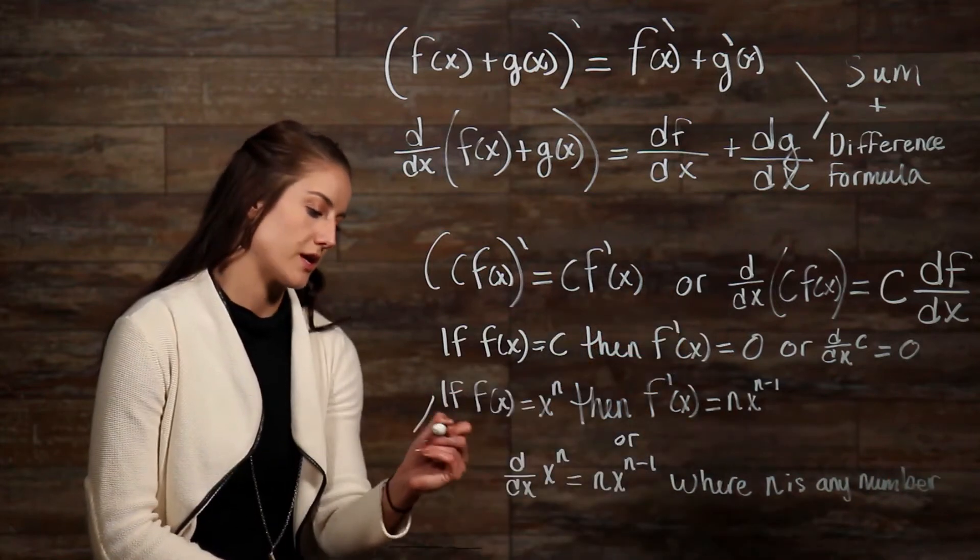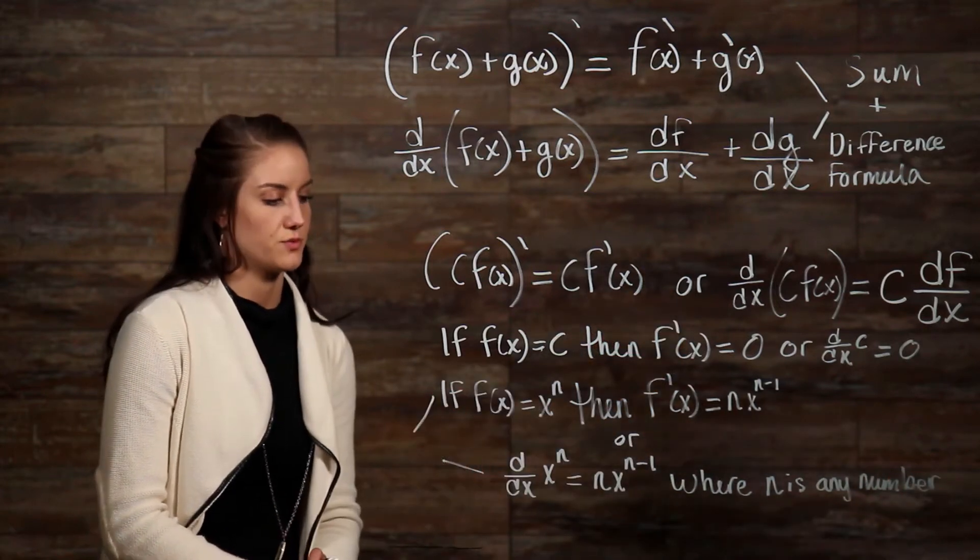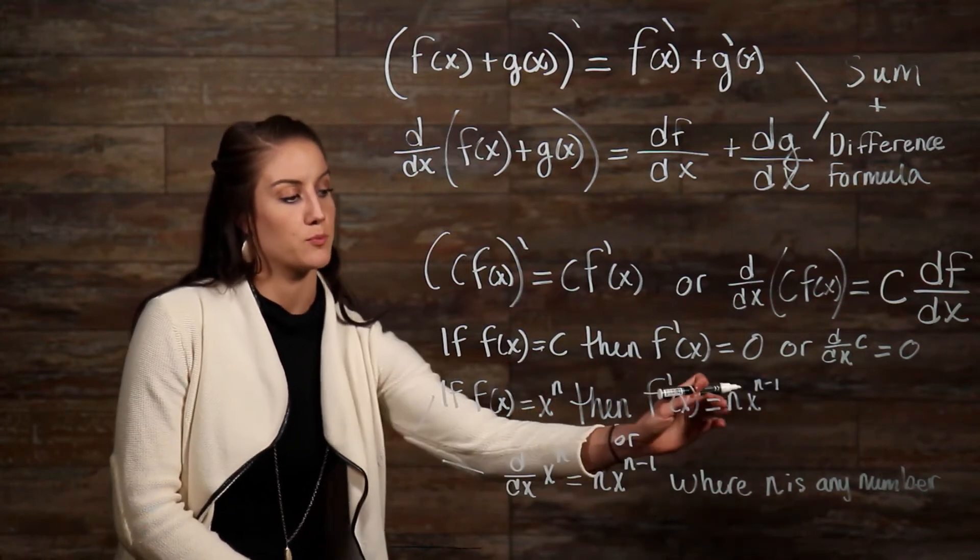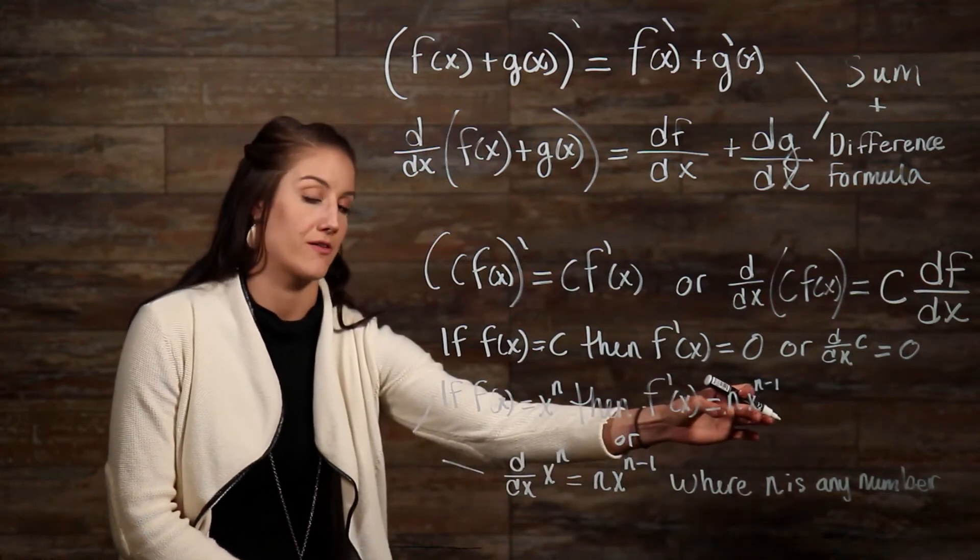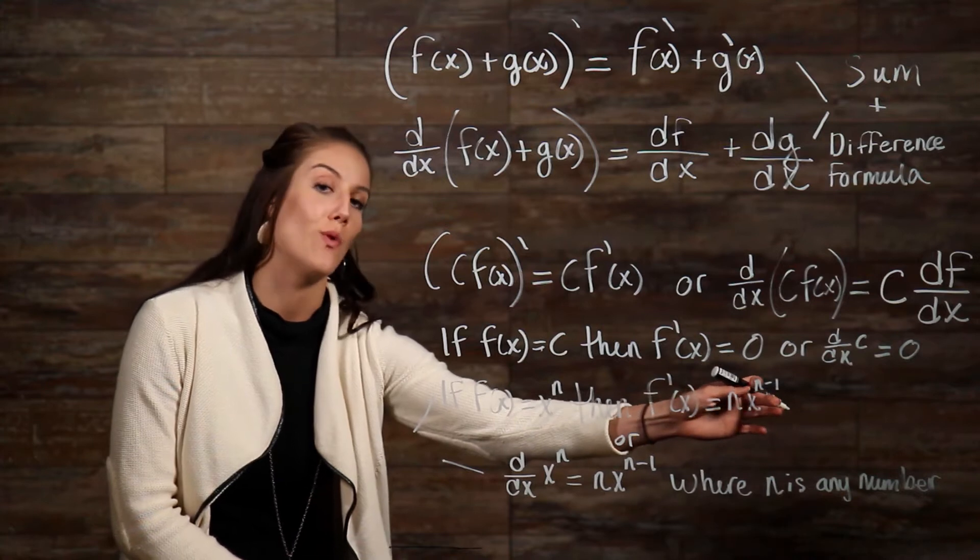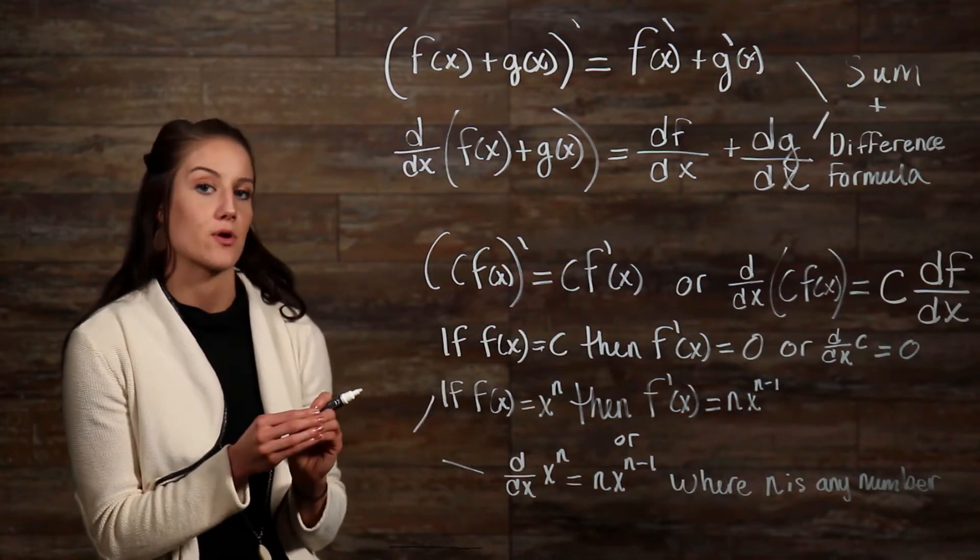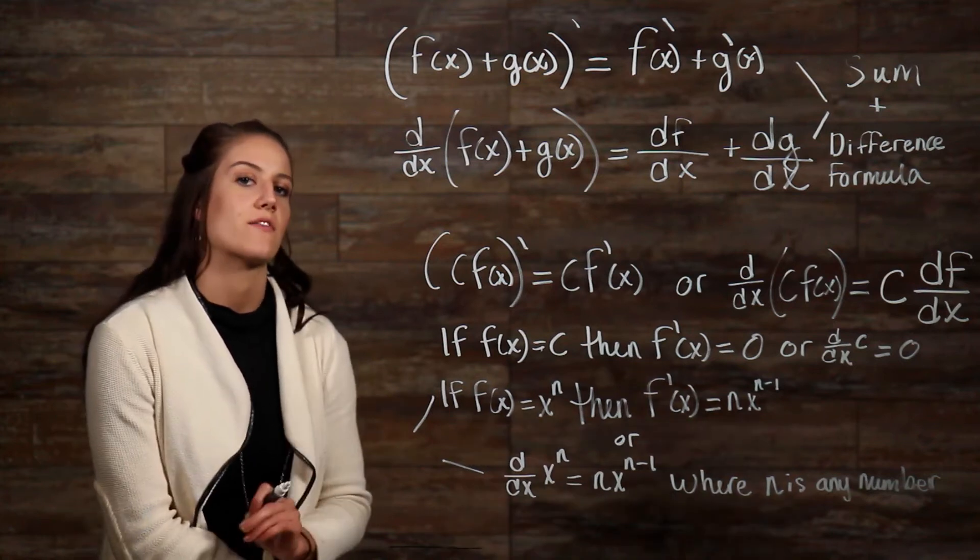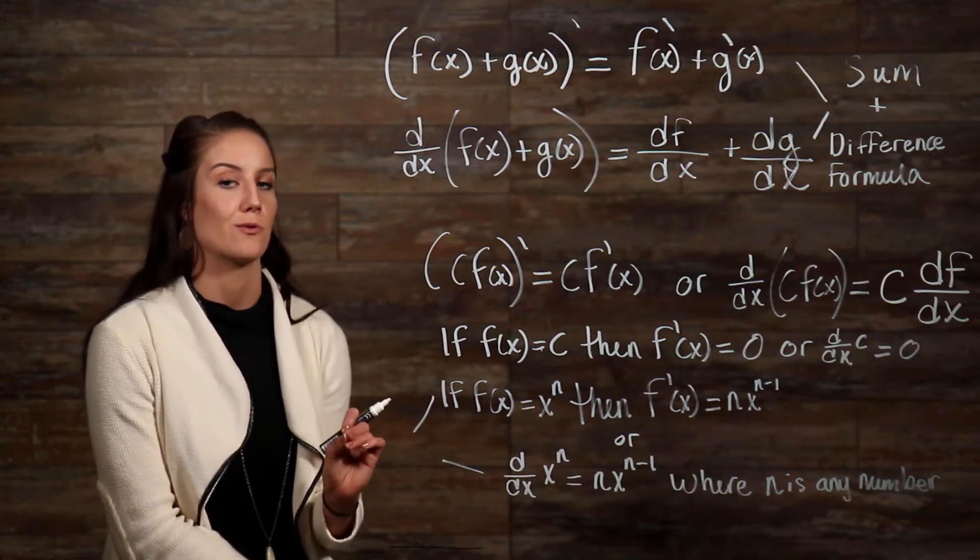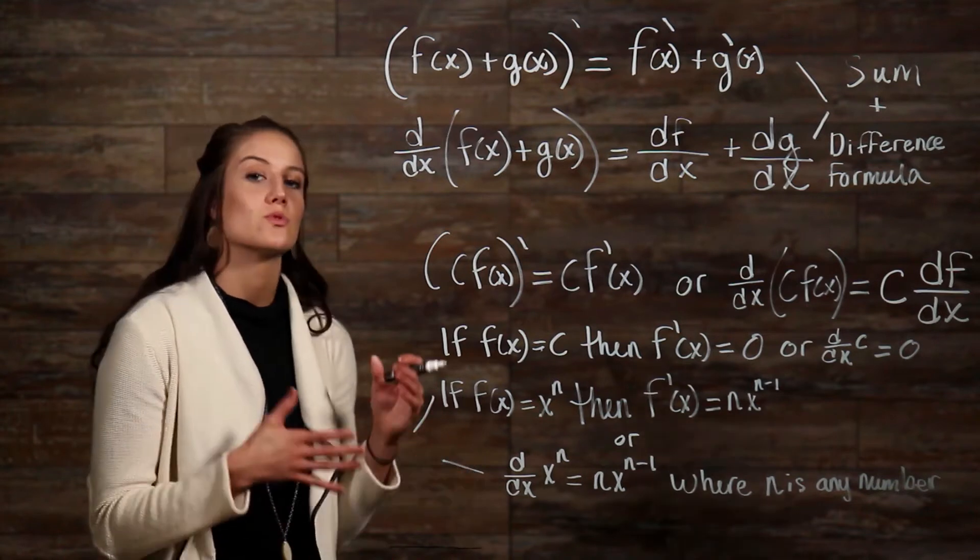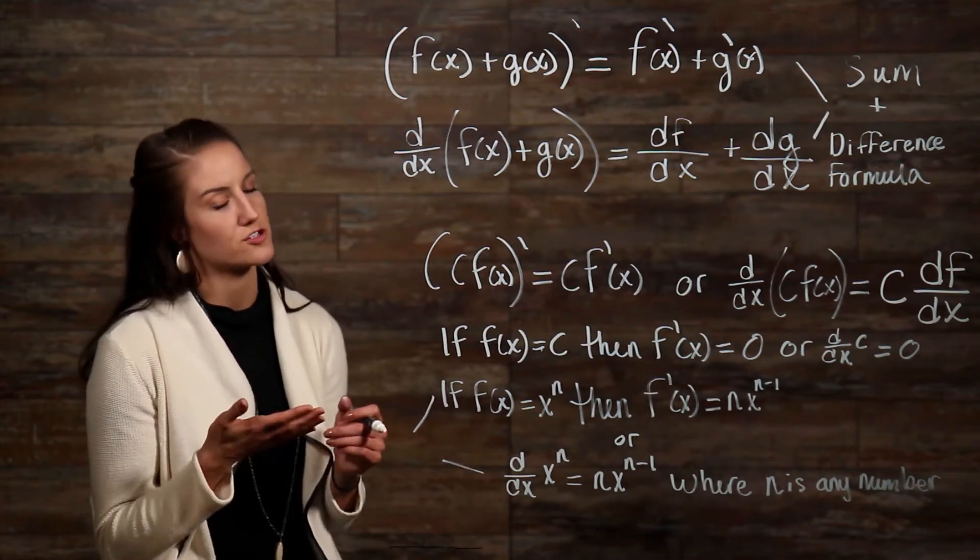What this formula right here is telling us to do is to take our exponent and bring it down to multiply by our variable, then subtract one from the exponent. The n in our formula has to be a number, not a variable. The base number, however, must be a variable to be able to use the power rule or else it would just be a constant, which we know is equal to zero from our first property.